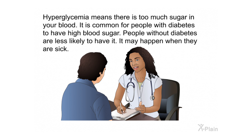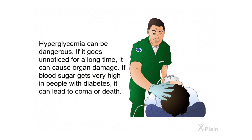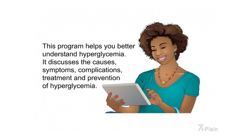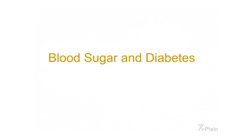Hyperglycemia means there is too much sugar in your blood. It is common for people with diabetes to have high blood sugar. People without diabetes are less likely to have it; it may happen when they are sick. Hyperglycemia can be dangerous if it goes unnoticed for a long time — it can cause organ damage, coma, or death. This program discusses the causes, symptoms, complications, treatment, and prevention of hyperglycemia.